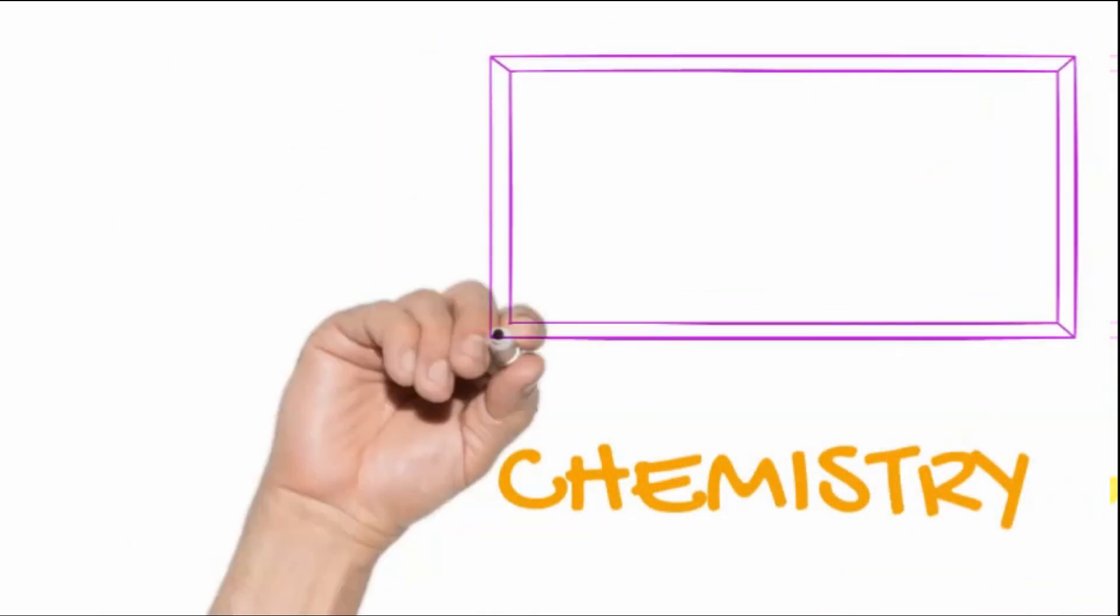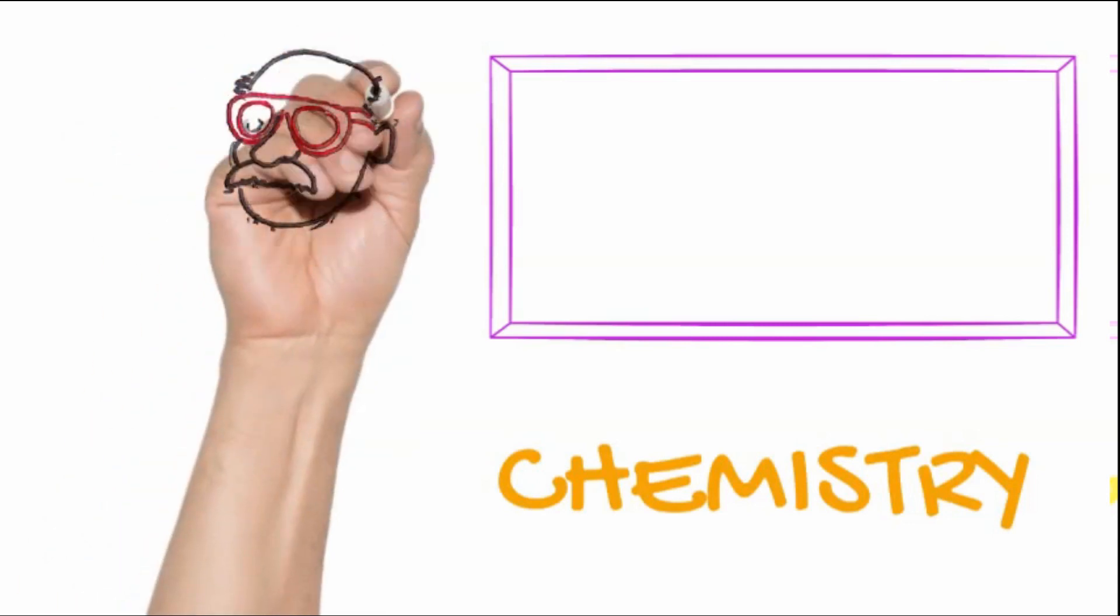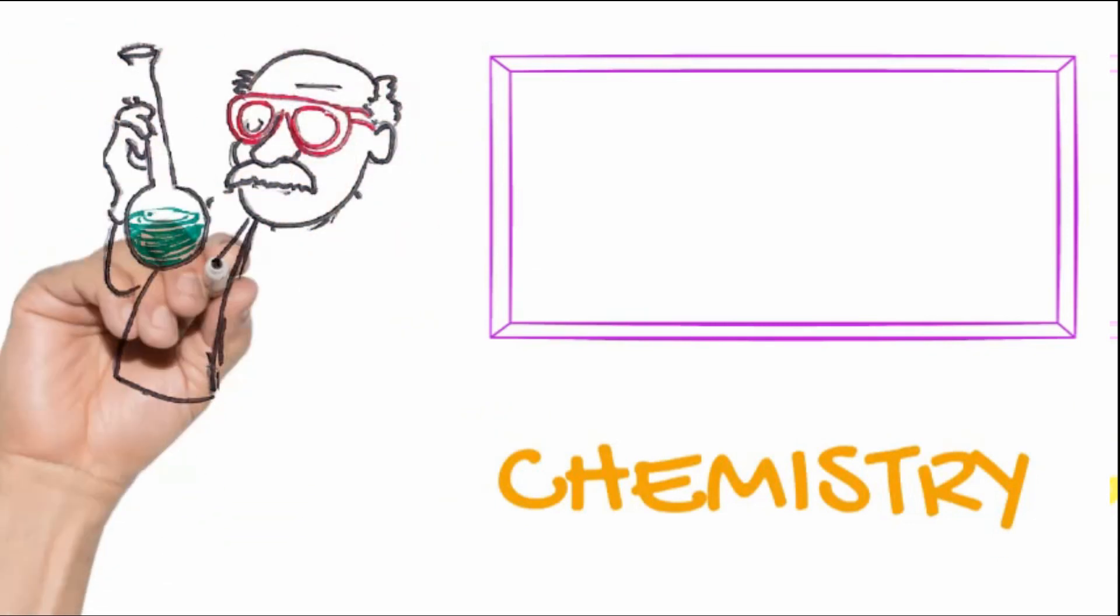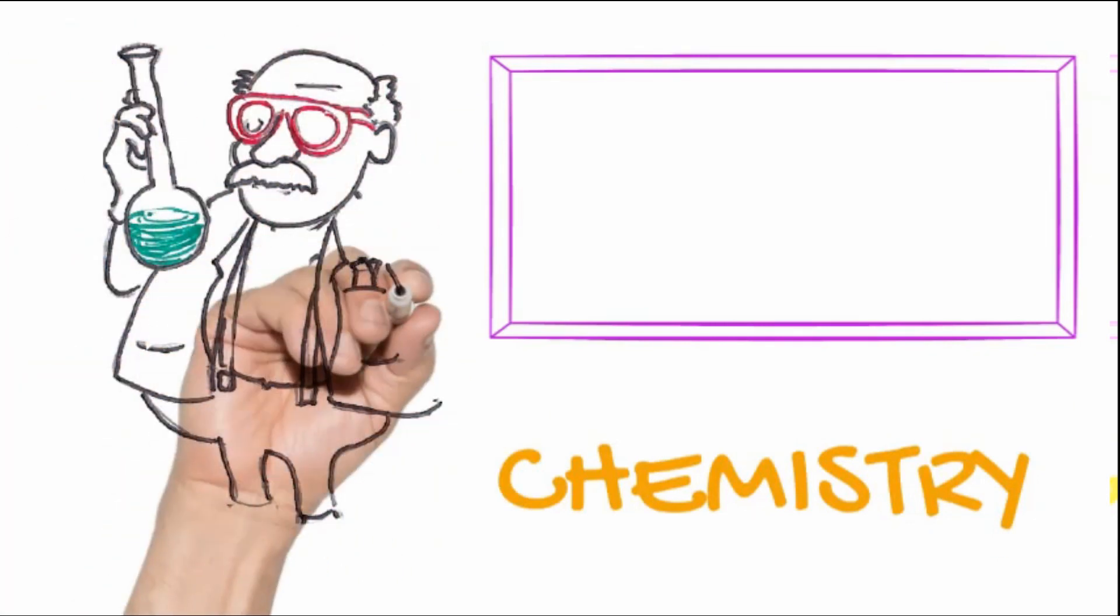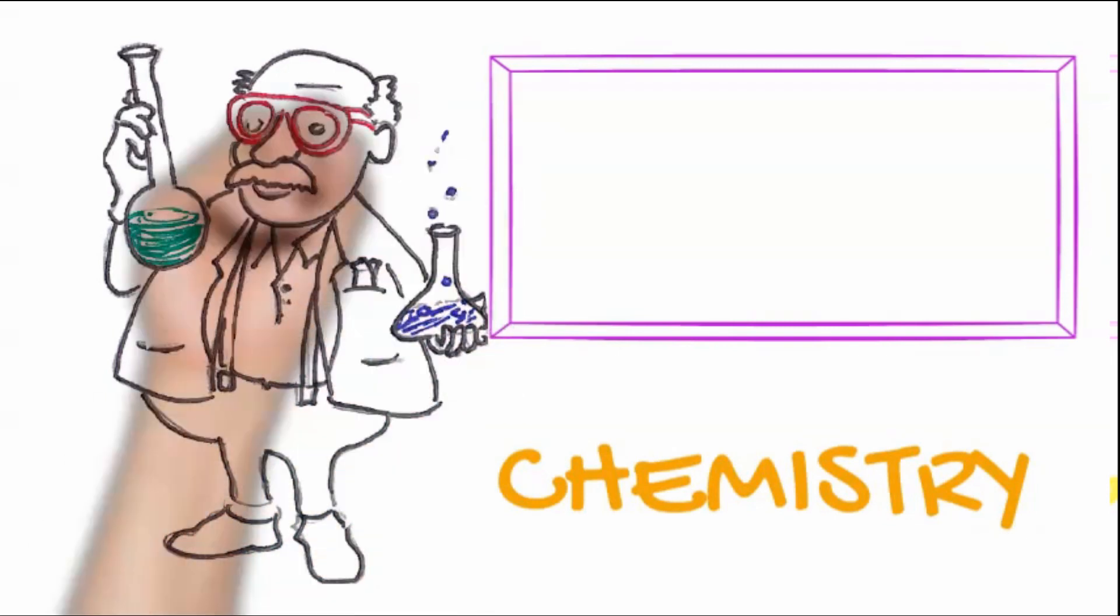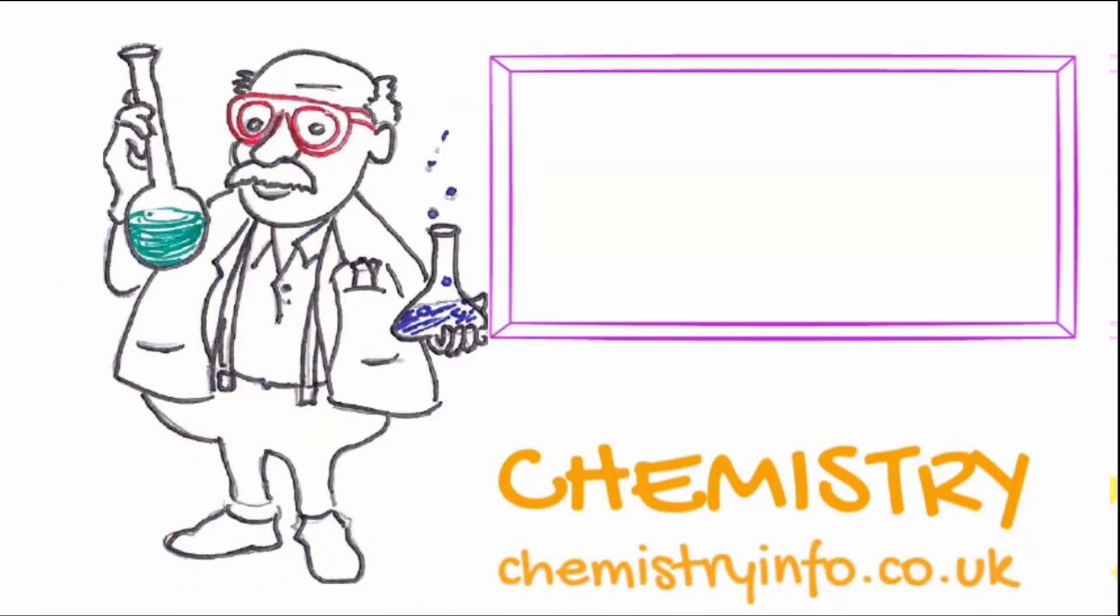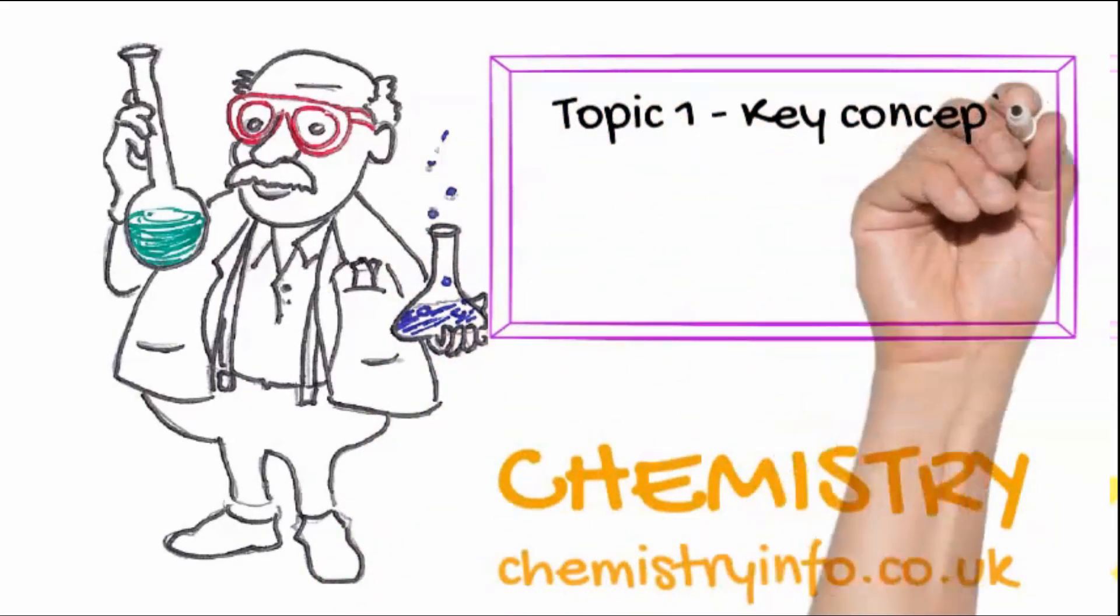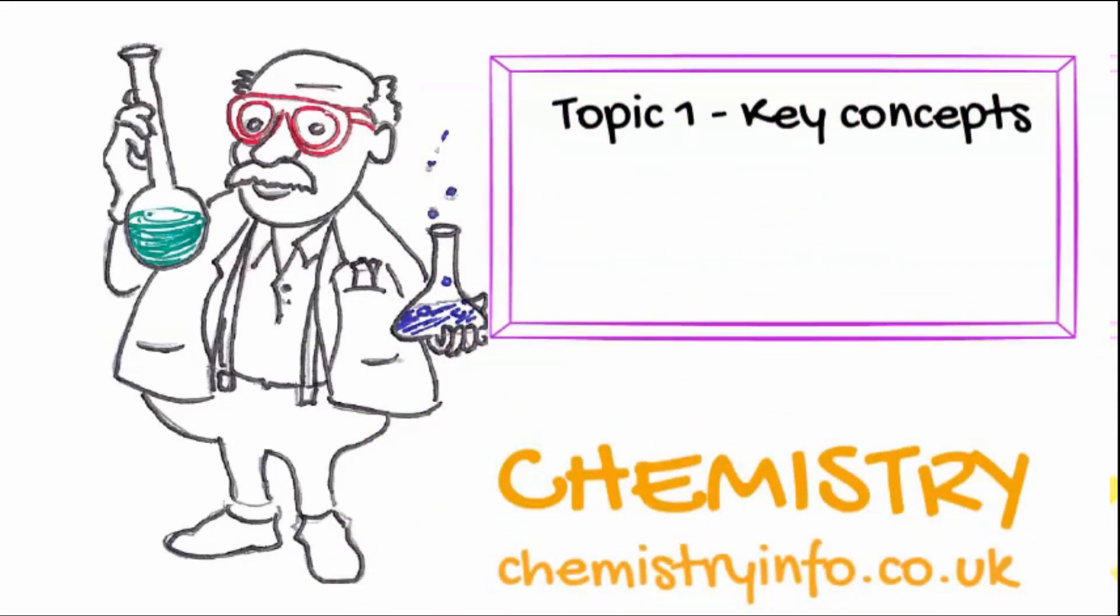GCSE Chemistry Tutorial from chemistryinfo.co.uk. Topic 1: Key concepts in chemistry starting with atomic structure.